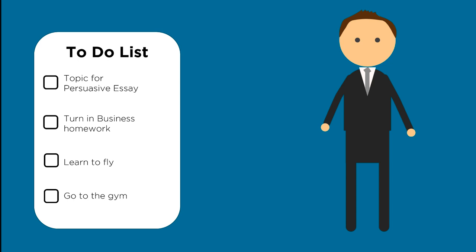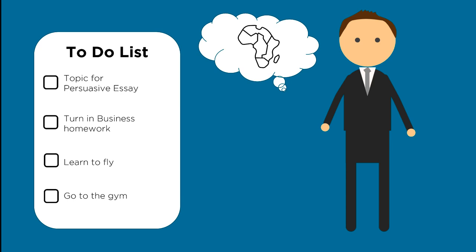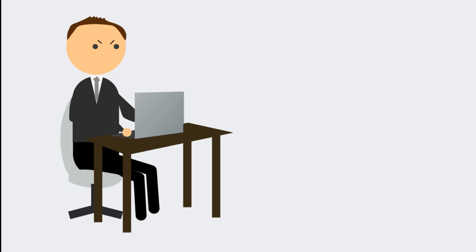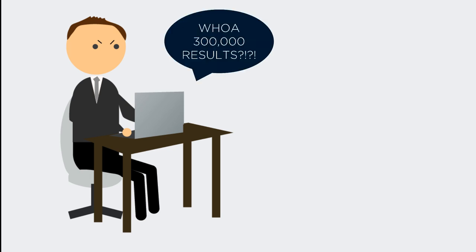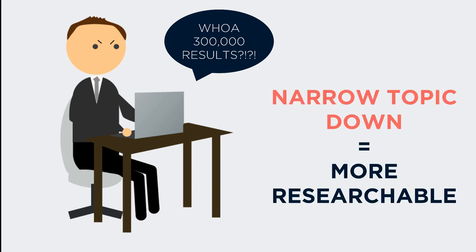Christian has to write a persuasive research paper. He recently got back from a trip to Africa and is interested in incorporating his experience into his research. Christian does a search on Africa in an article database, and his initial search returns over 300,000 results. This helps Christian realize that his topic is too broad, so he needs to figure out a way to narrow it down into something more researchable.